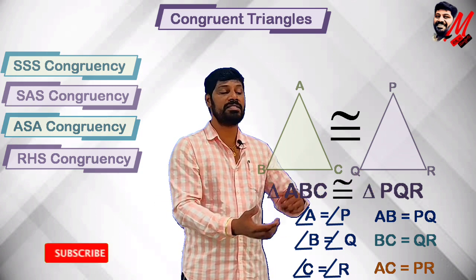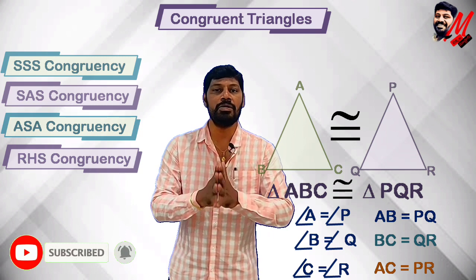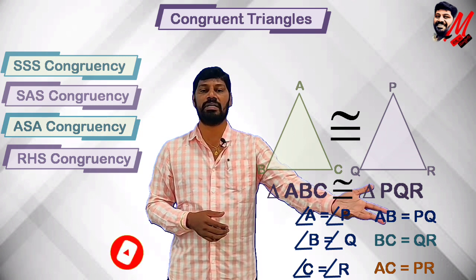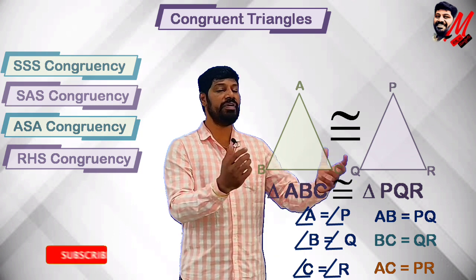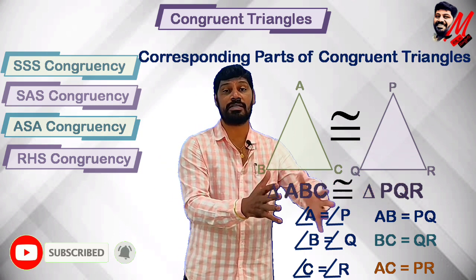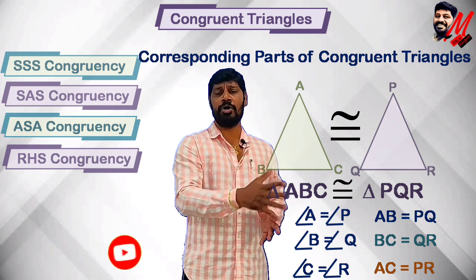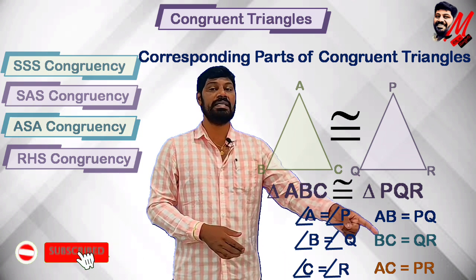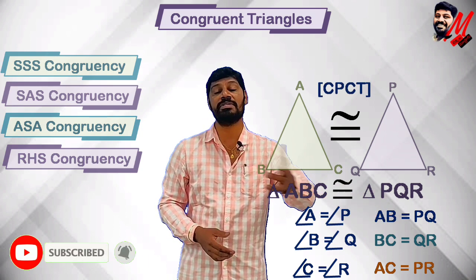So, corresponding angles are equal and corresponding sides are equal when two triangles are congruent. This particular relationship is called the corresponding parts of congruent triangles. The short form used in every problem is CPCT.